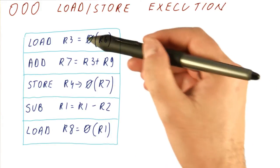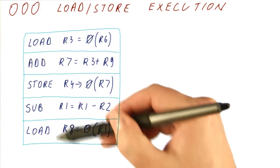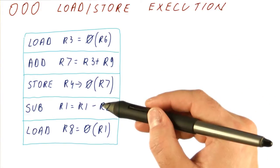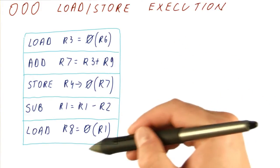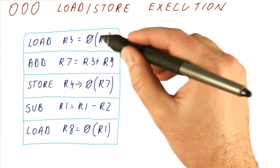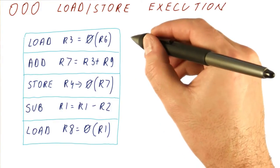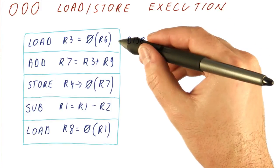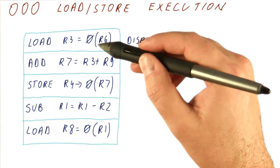In an out of order processor, when we try to execute these instructions, this is what might happen. Let's say that all of these have already been fetched, decoded, etc. So, let's say that the load, because it only depends on R6, which no other instruction is supposed to produce, it can dispatch. So it goes to memory and eventually will come back with R3.